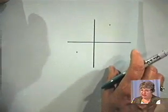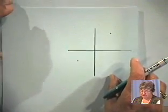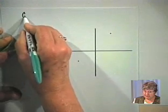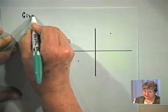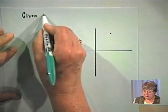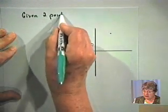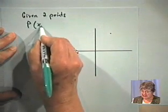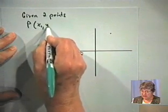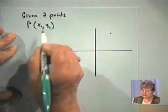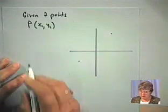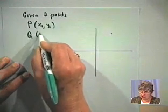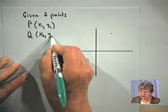Suppose we have two points. Suppose that we have the point P with coordinates x1, y1 as subscripts. And suppose we have the point Q with coordinates x2, y2.